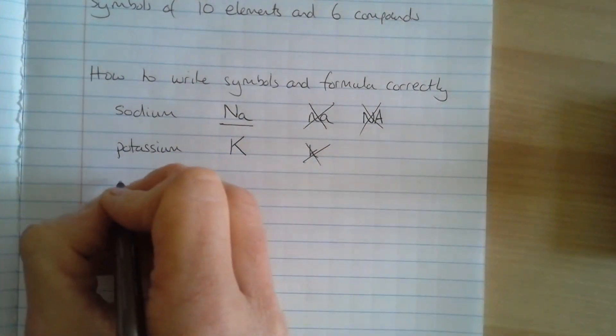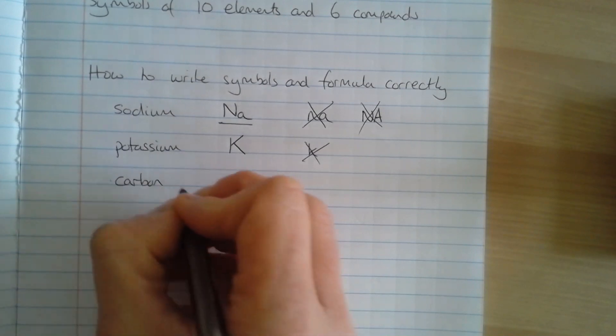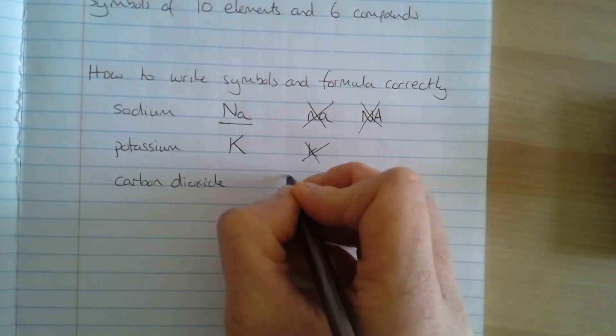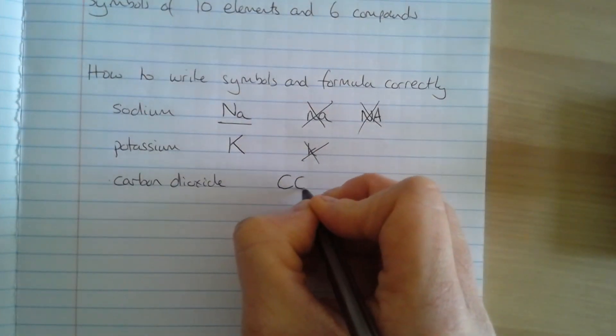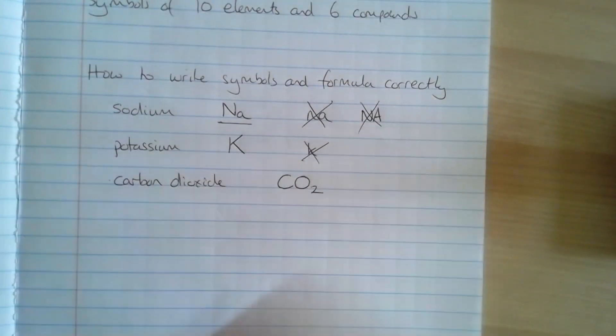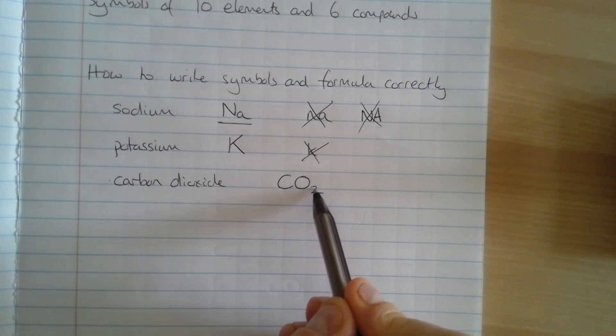When it comes to writing formulae, if we have a look first of all at carbon dioxide. Carbon dioxide is a molecule that's made of one carbon atom, so it's a capital C, and two oxygen atoms, so it's a capital O, a big O with a small two after it. Notice that that two is written so that it's halfway between the line above and the line below. And it's a small two.